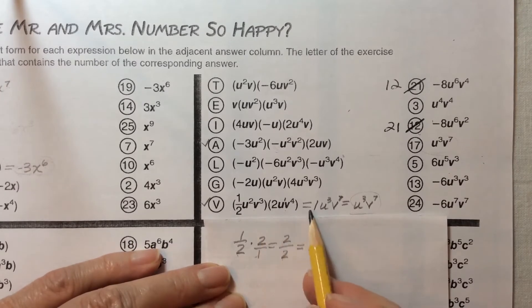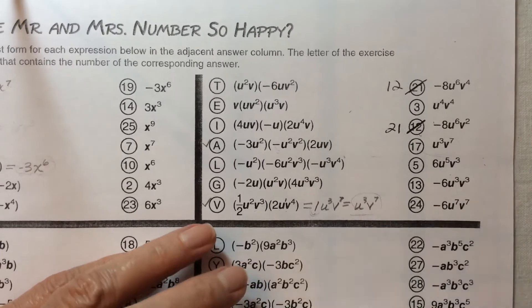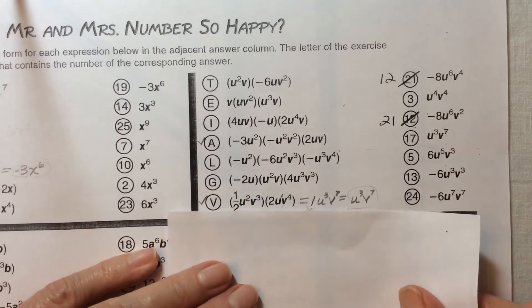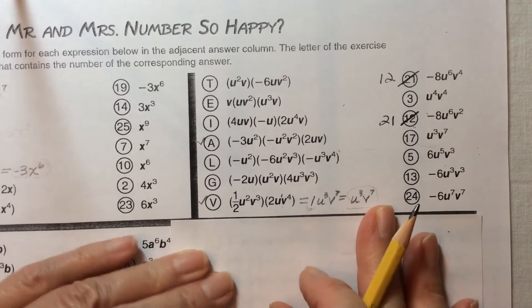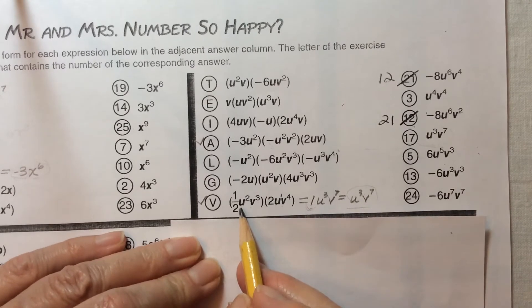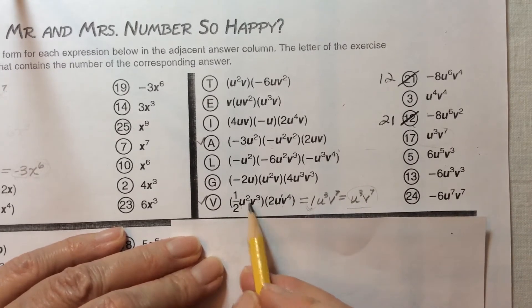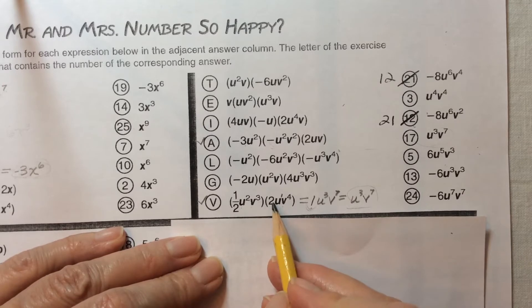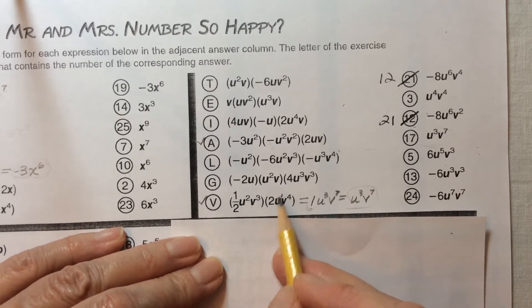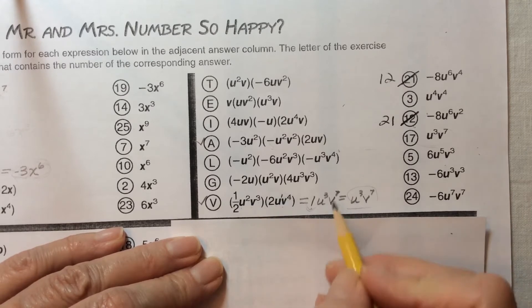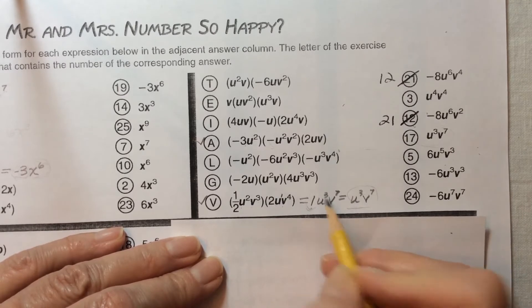All right so we know that we're going to have 1 in our answer. All right so let's take a look at the rest of this. So if we take u² and multiply it times u¹ we get 2 plus 1 that's u³.